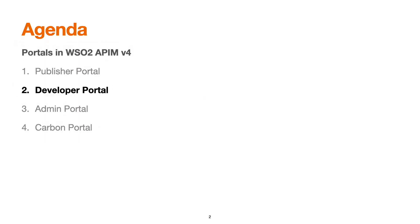In the first part we covered the overview of the publisher portal, where we saw how to create an API and how to manage the API lifecycle. Now we will see the overview of the developer portal. The developer portal is basically used by application developers to discover APIs, create an application, subscribe to APIs, and generate API credentials followed by API testing.